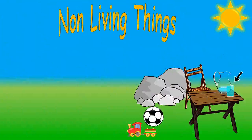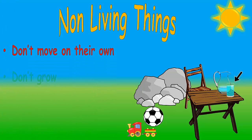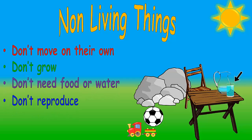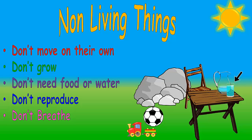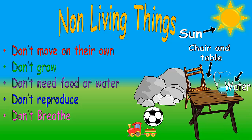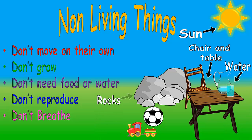Non-living things don't move on their own, don't grow, don't eat food or water, don't reproduce, and don't breathe. For example, the sun, this chair and table, water, rocks, or toys.